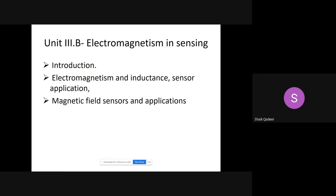The second part of Unit 3 is electromagnetism in sensing. Already we have studied this type of sensor, but this topic discussion is different. What we are going to do is we see how the inductance, how the electromagnetism supports in sensing.